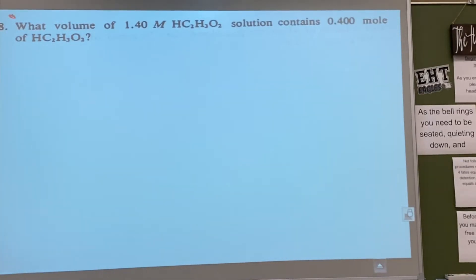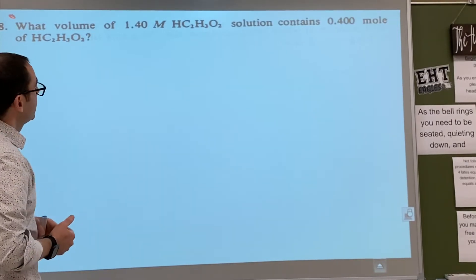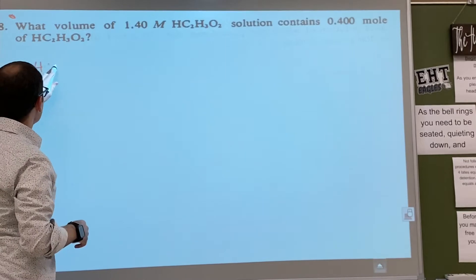Alright, number eight. So what volume? We're looking for volume. How many units does that have? One, good. So what are we going to start with? Yeah, look at this. It starts with moles. Okay, so 0.400 moles HC2H3O2.